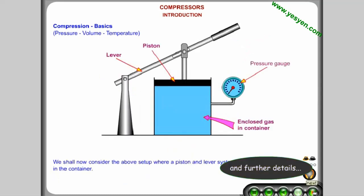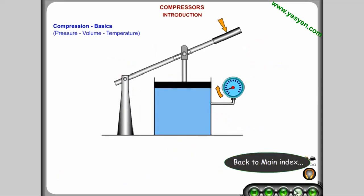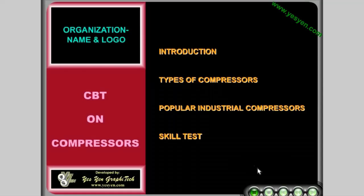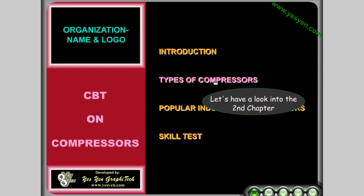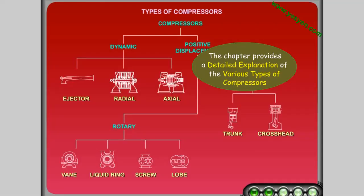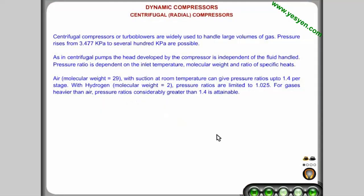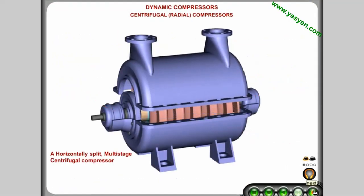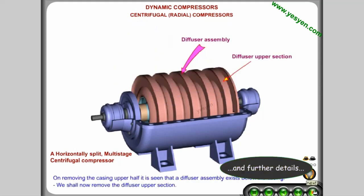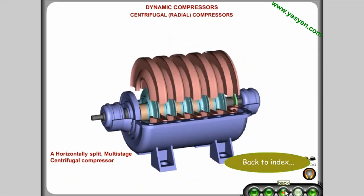Animations can be replayed for clarity, with further details available. Back to main index. Let's have a look into the second chapter, which provides a detailed explanation of the various types of compressors. Let's look into the radial type, with further details available.